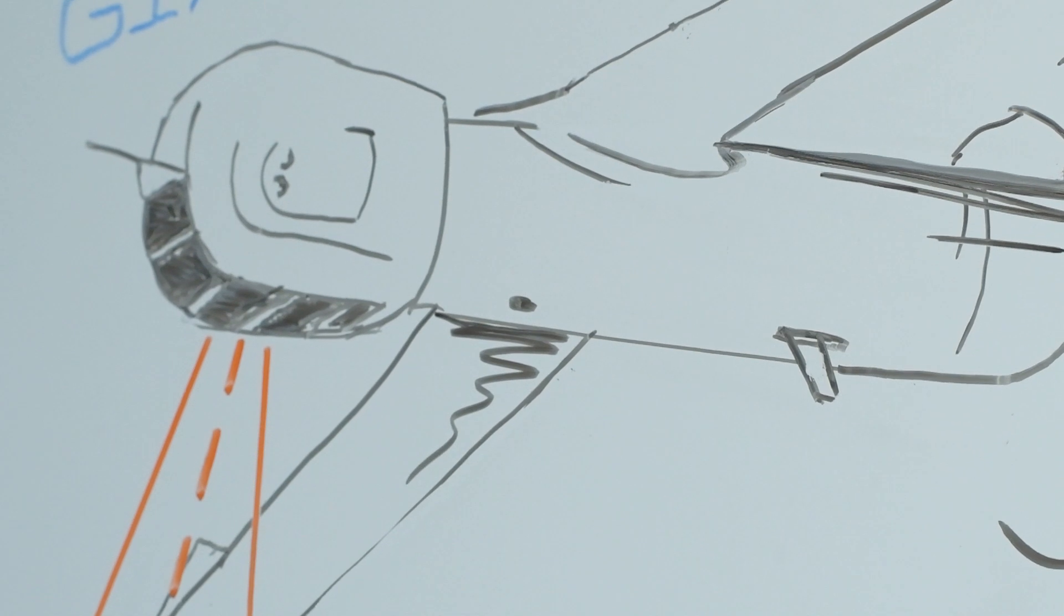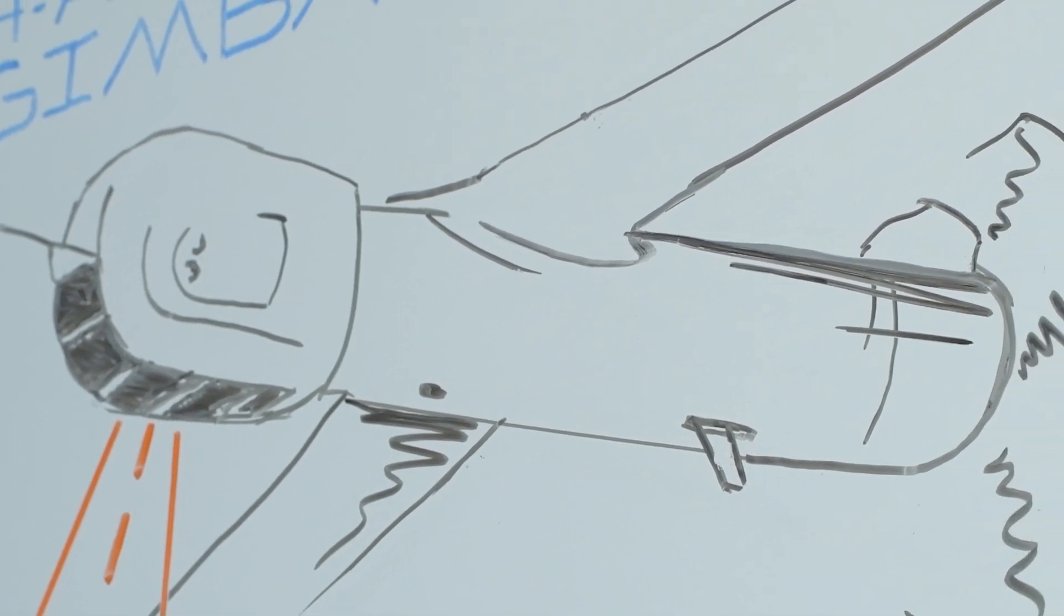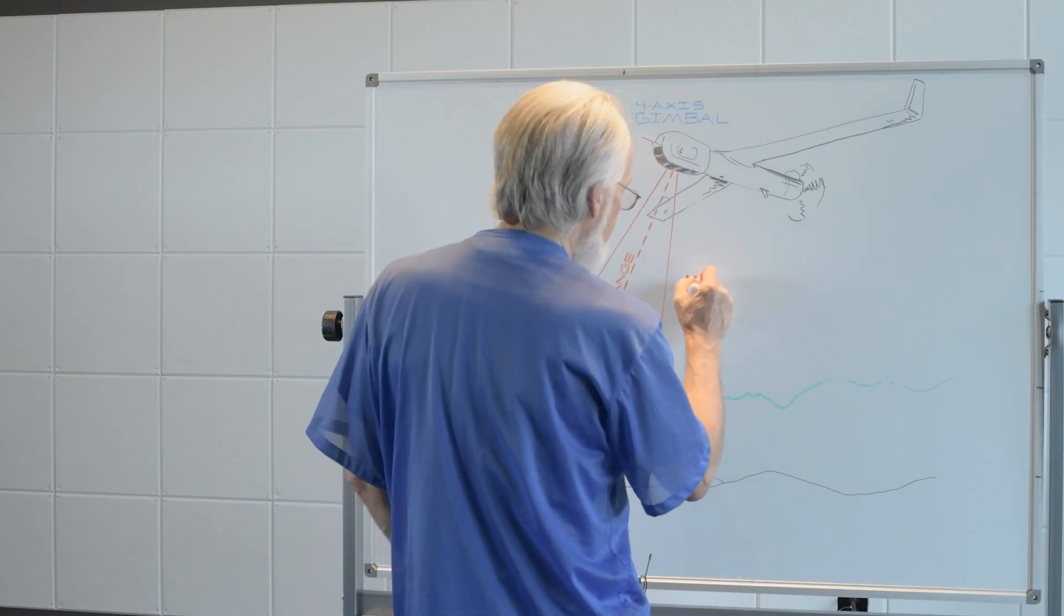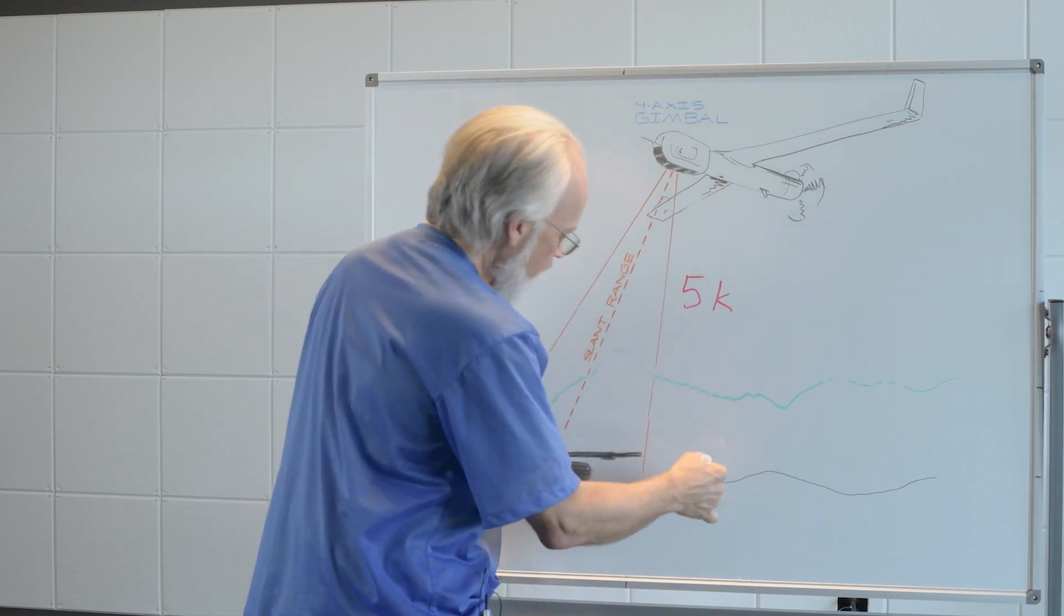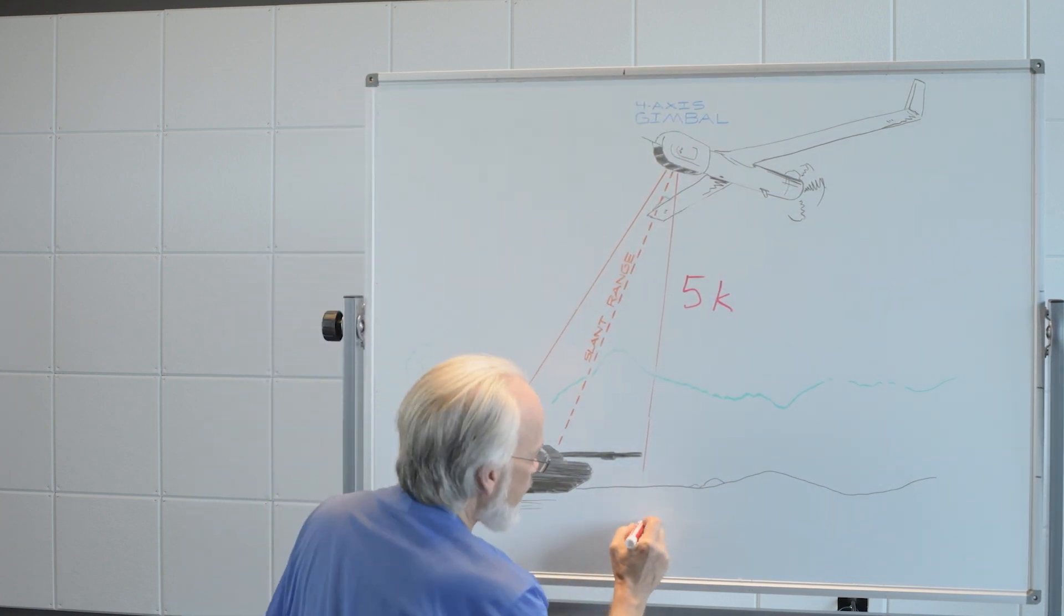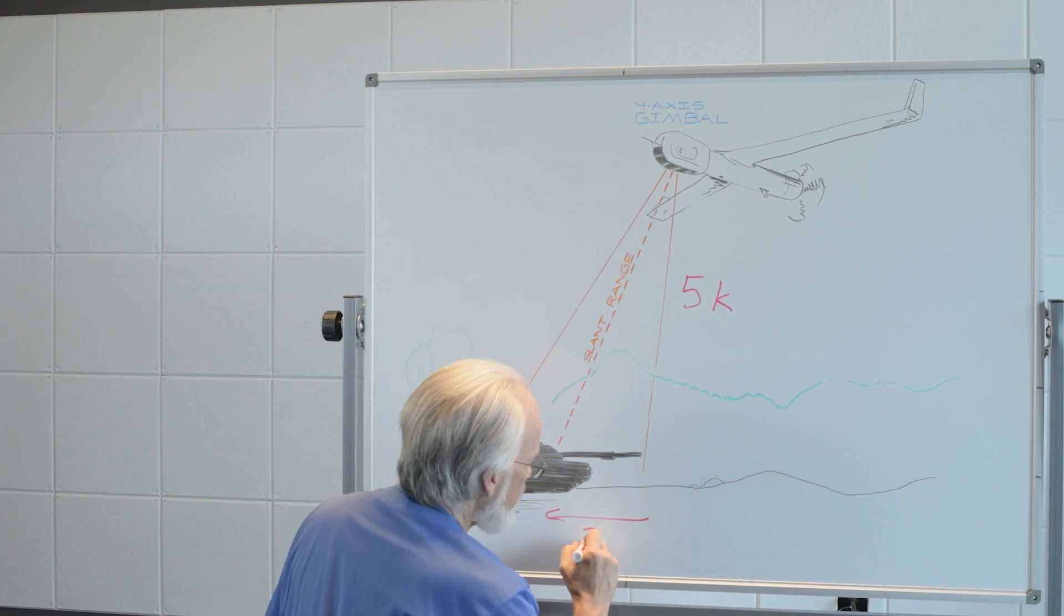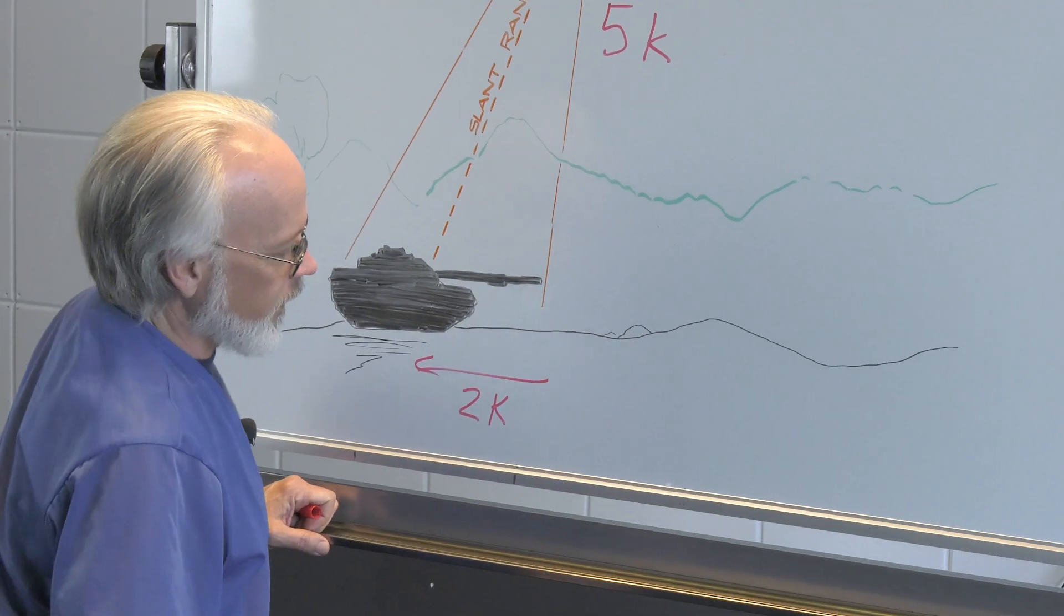Let's work this scenario with some simple numbers. I'm going to estimate that this aircraft is flying at about 5,000 feet, let's simplify it by calling it 5k, and that its object is about a horizontal distance of 2,000 feet over here.